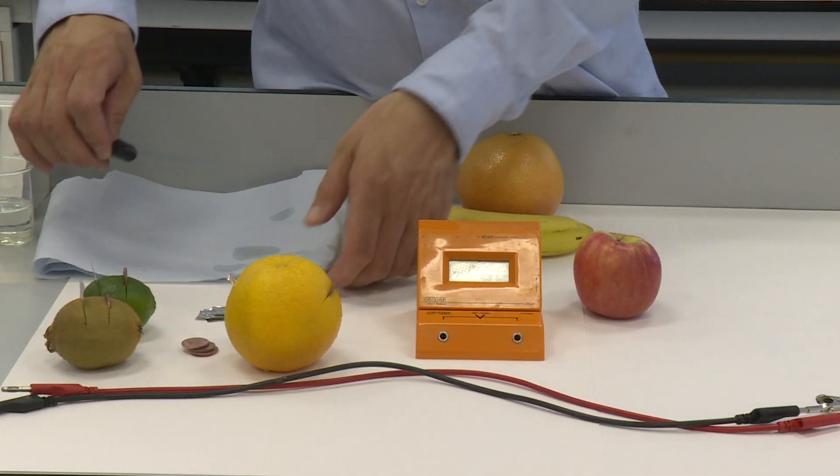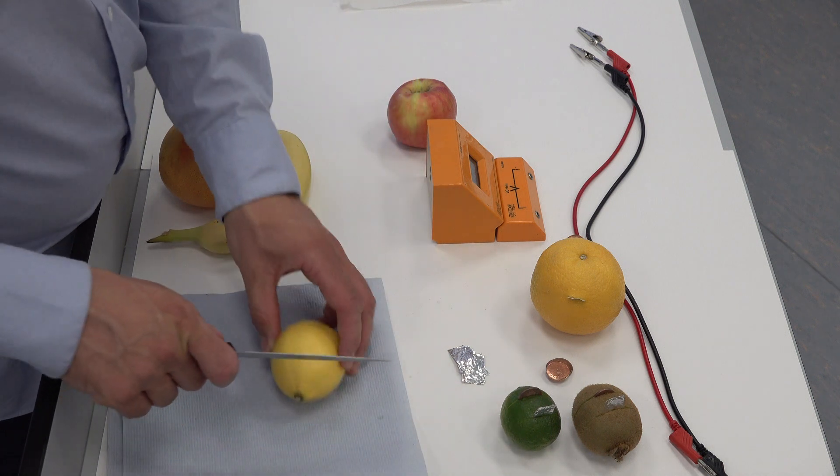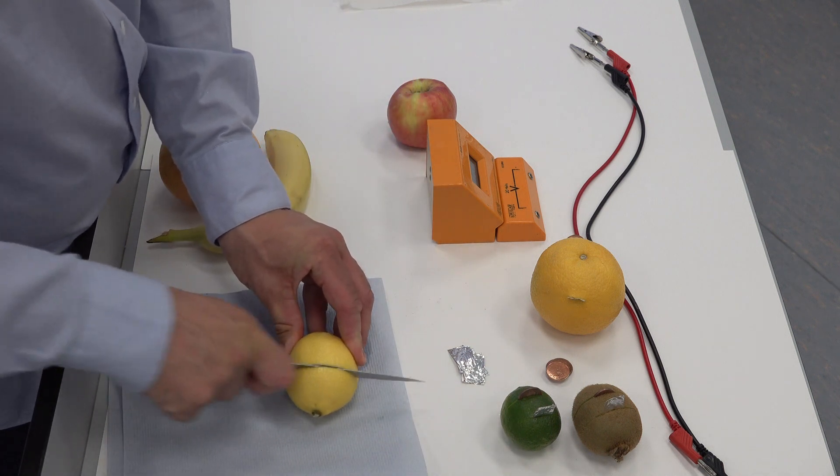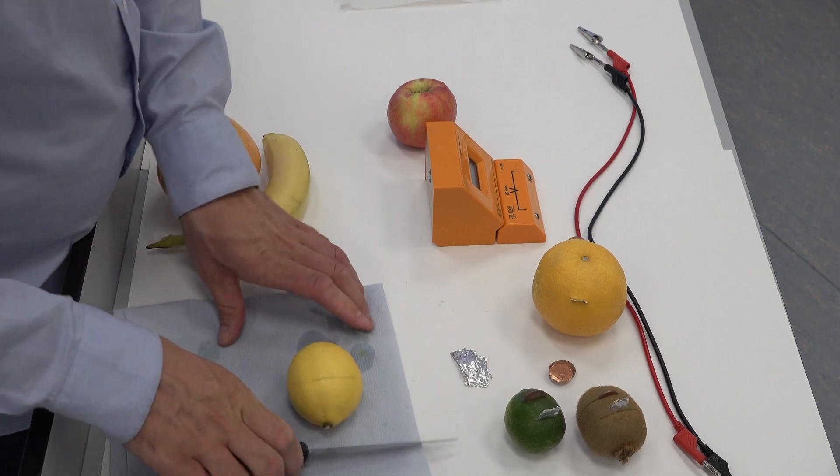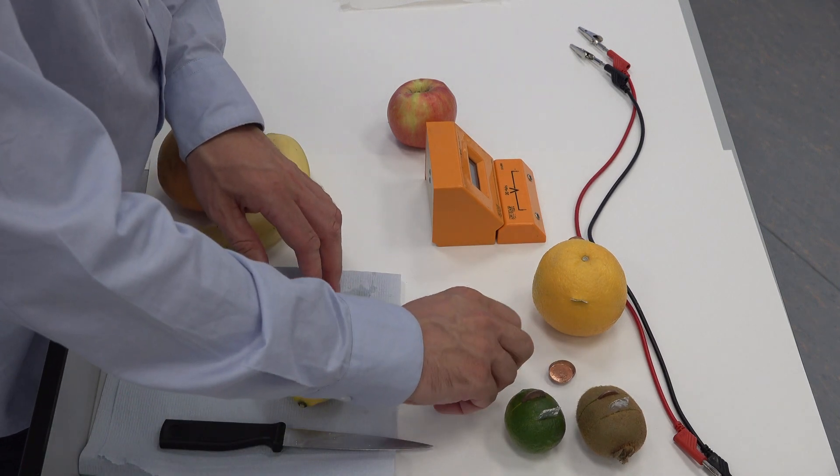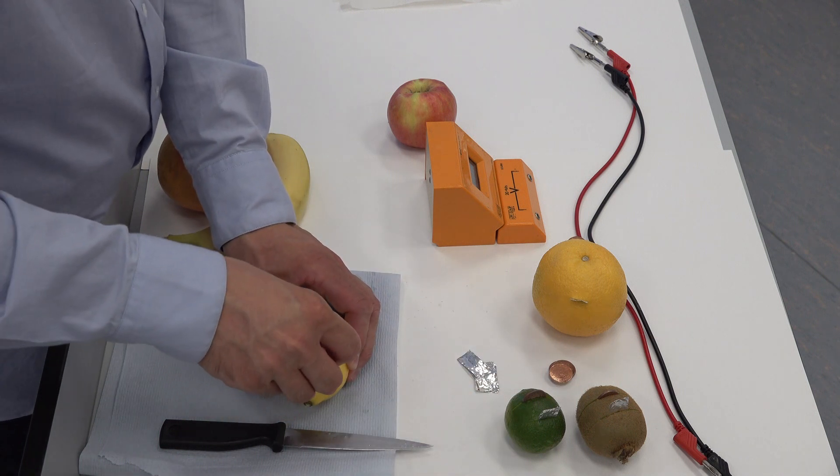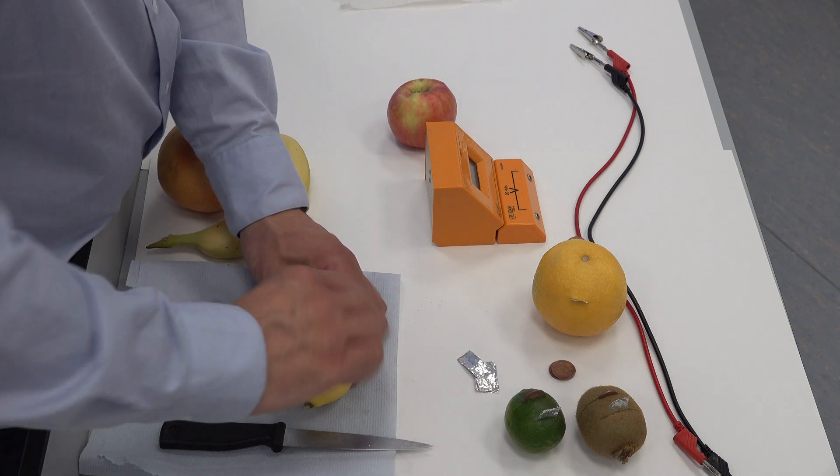So the lime has the coin and aluminum foil in it. Put them around the same way just to make it nice and simple. Do a lemon next.